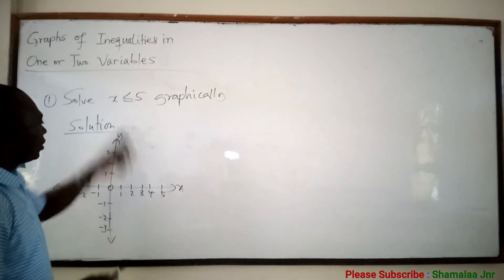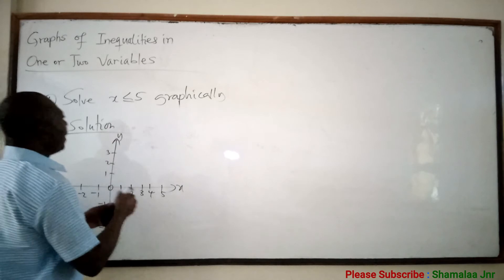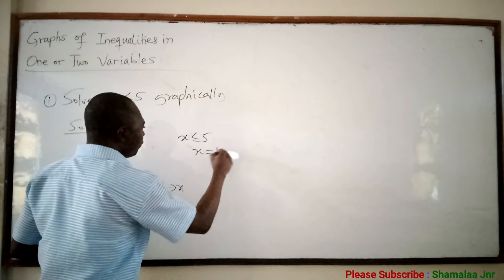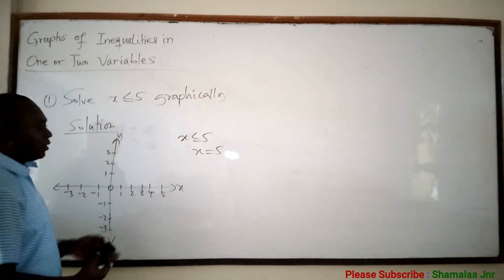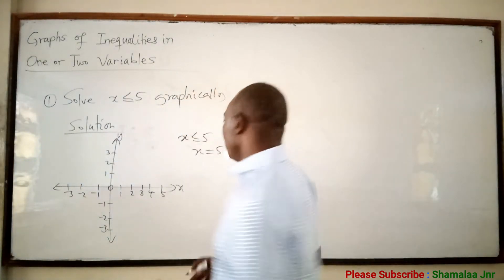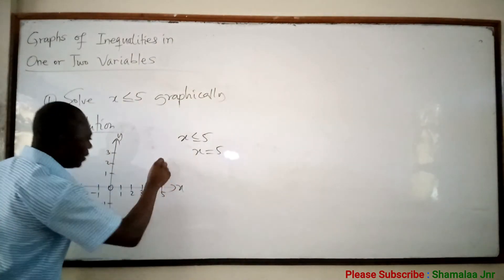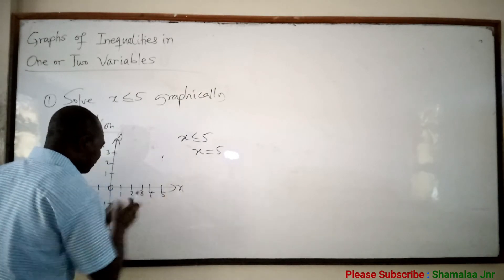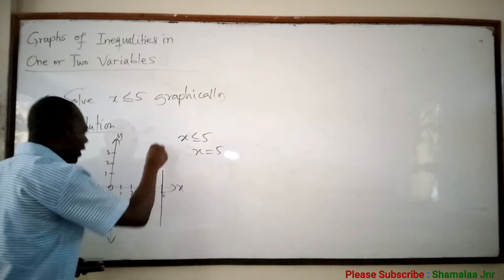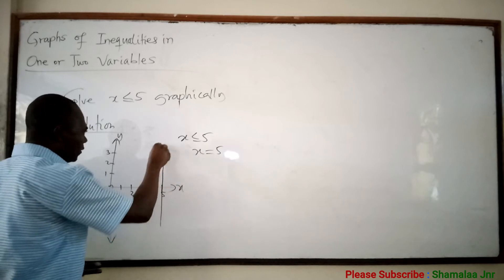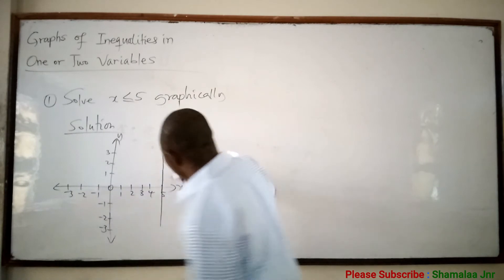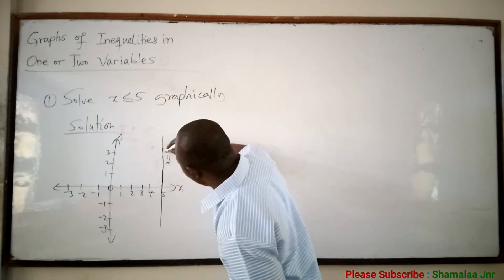Before you can do this, you have to convert the inequality x less than or equal to 5 into x equal to 5. When you get x equal to 5, I am going to plot a graph of x equal to 5. If you draw a line to pass through x equal to 5, use your straight edge. So this is the line x equal to 5.